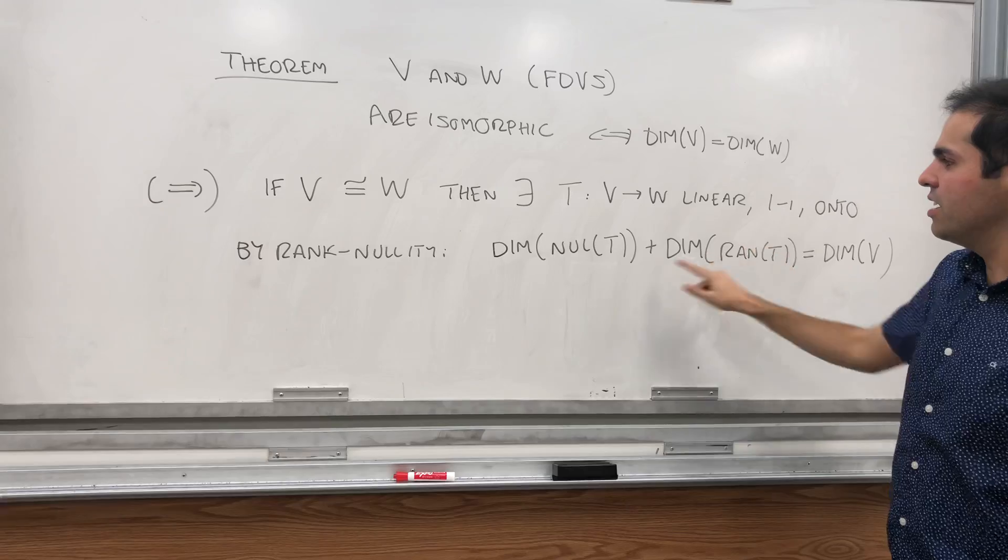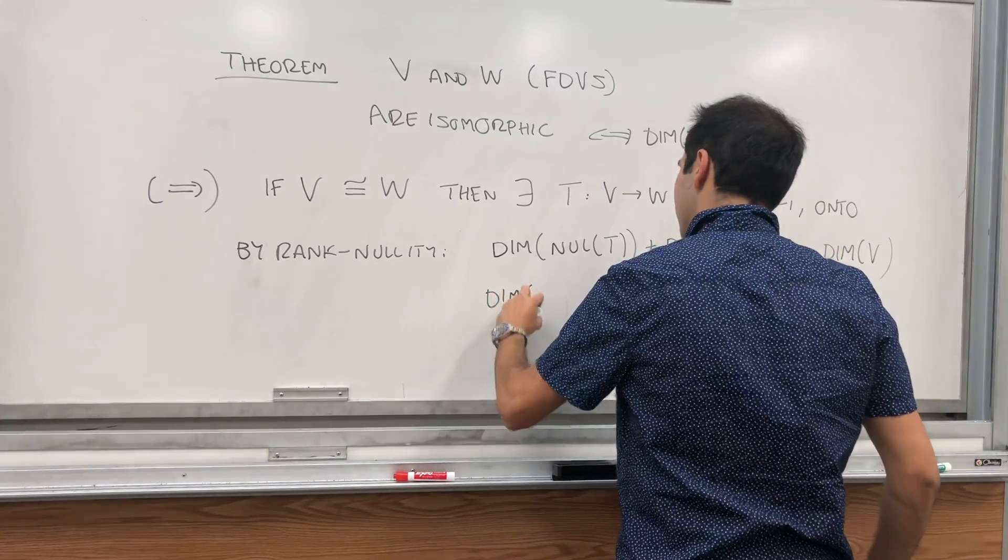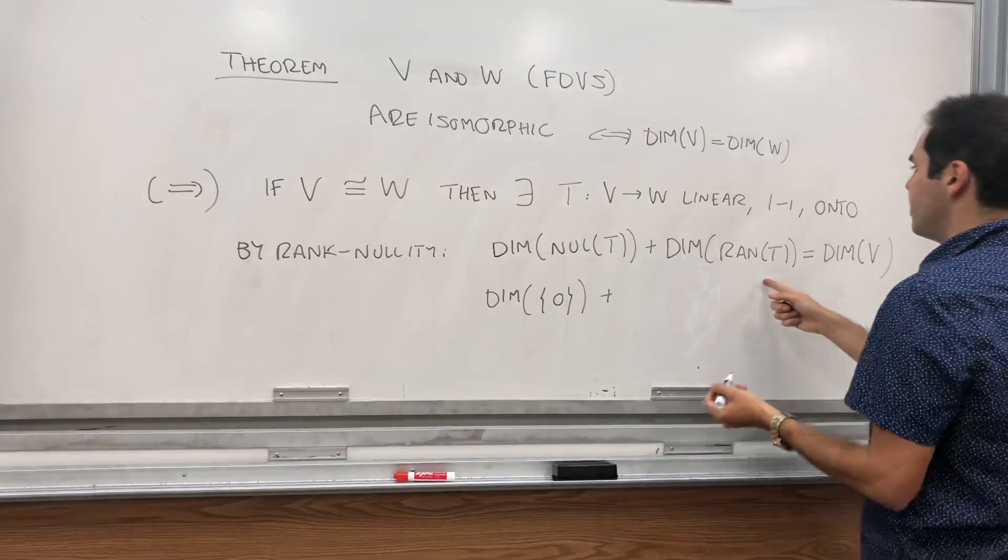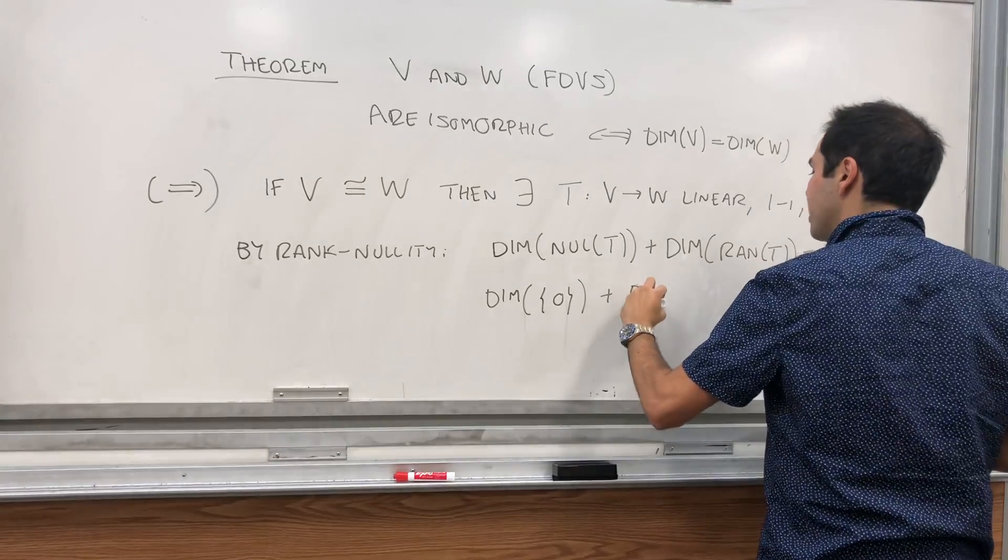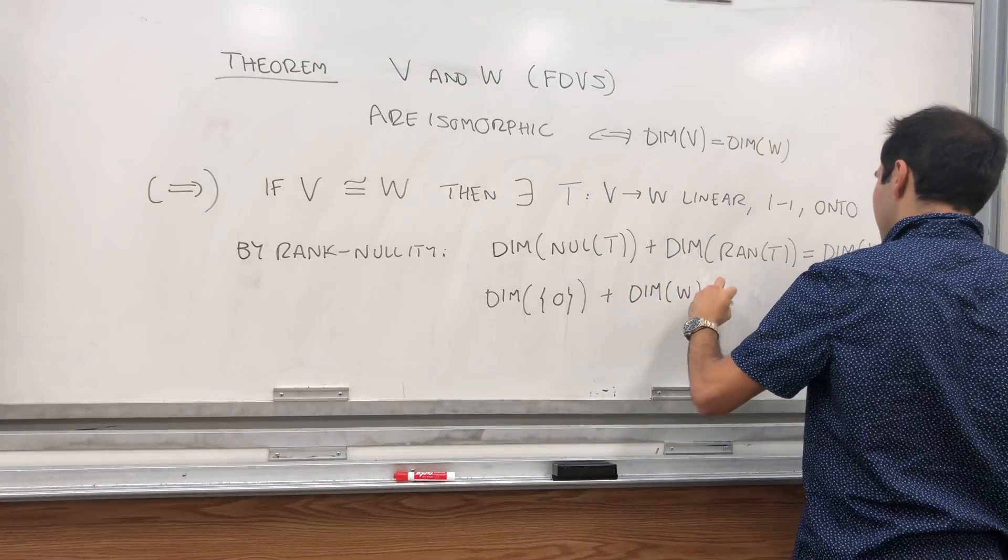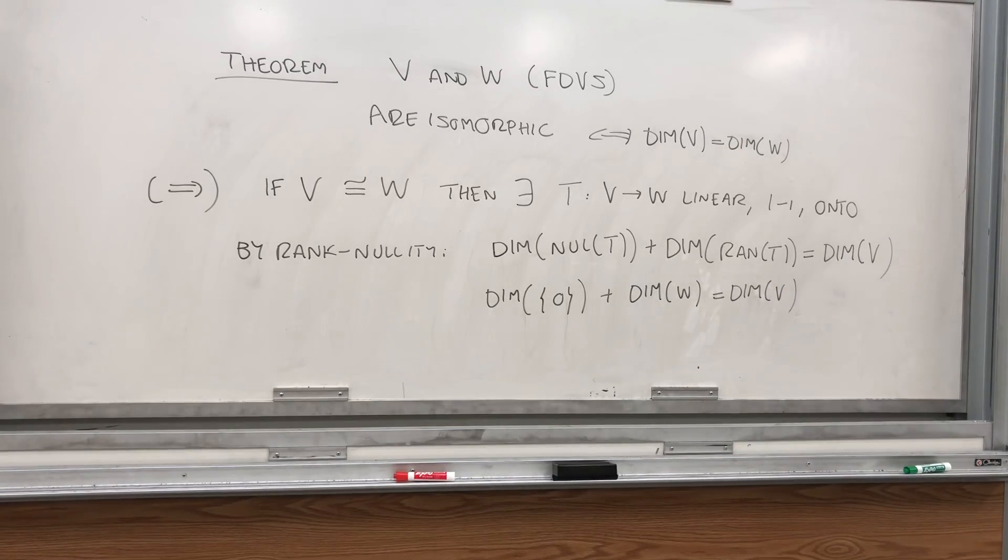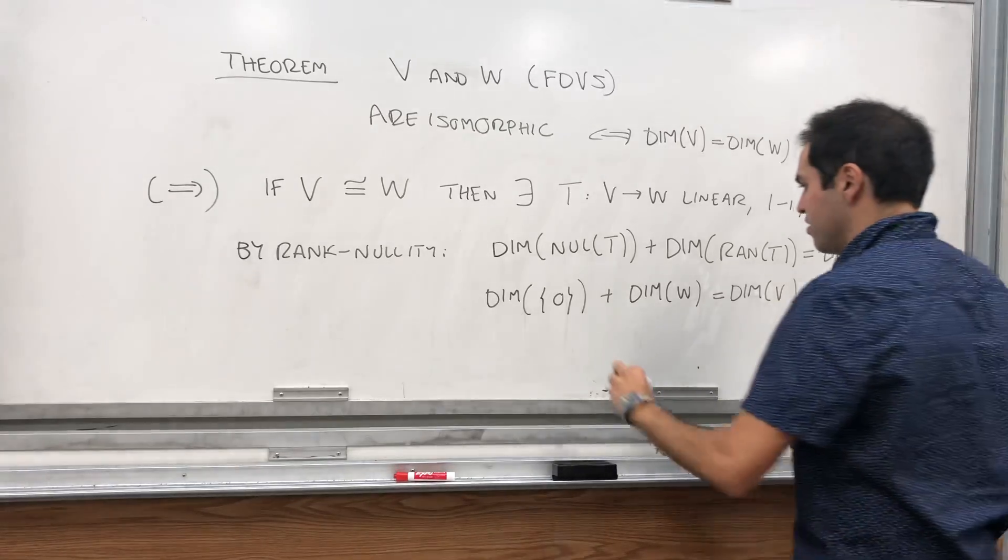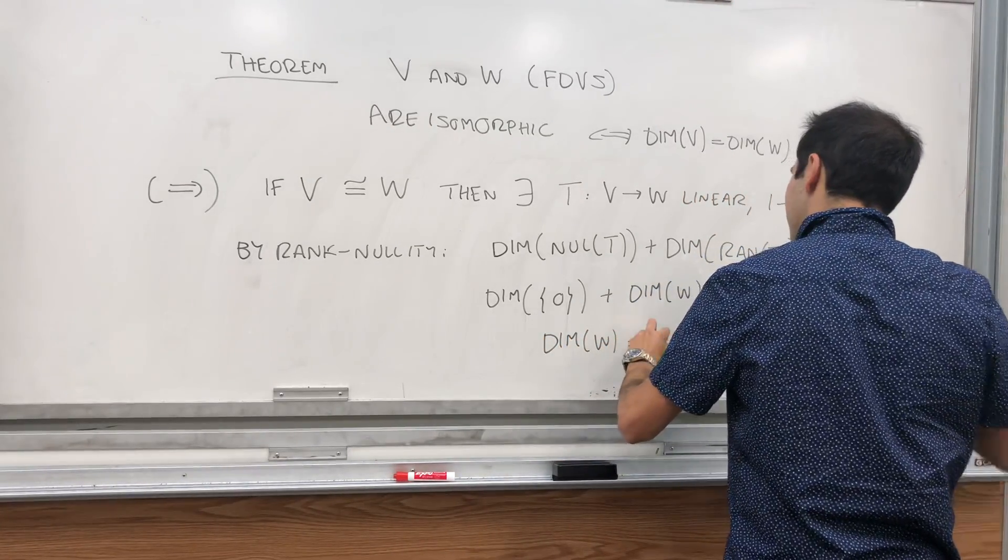But here then, it's very nice because look, if T is one to one, then the null space is zero. Just a zero space. On the other hand, if T is onto, then the range is all of W. So, we get dimension of W equals to the dimension of V. And, the dimension of the zero space is zero. So, this is zero. And therefore, we get dimension of W equals dimension of V.